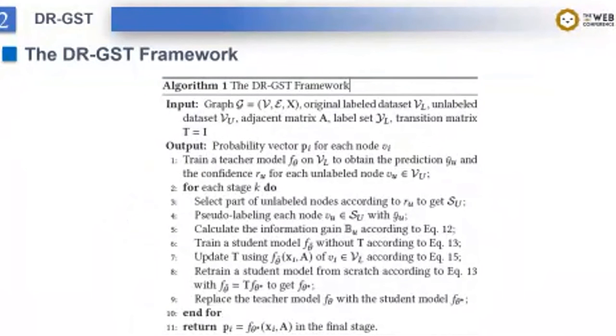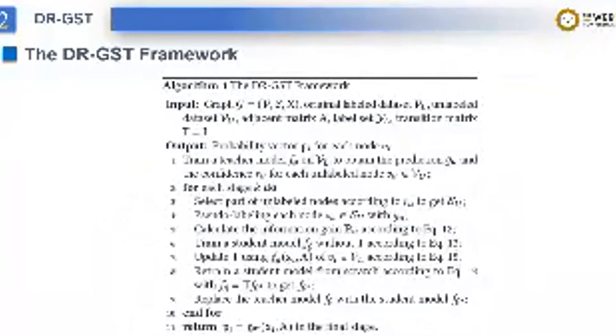The computation of transition matrix is shown before, and more details can be found in our paper. Finally, we got our novel self-training framework, named as DR-GST. Specifically, we first train a teacher model on the labeled dataset. Then we pseudo label part of unlabeled nodes and calculate their information gain. Subsequently, we calculate the transition matrix and finally train a student model. We repeat the procedure above until convergence.